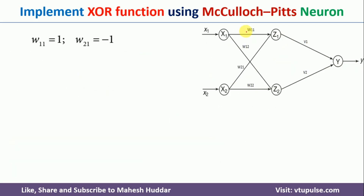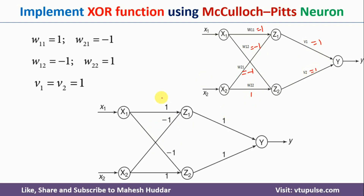The final weights are: W11 = 1, W12 = −1, W21 = −1, W22 = 1, V1 = 1, and V2 = 1. This is how the XOR logic function is implemented using the McCulloch-Pitts Neuron. In this video, I discussed how to implement the XOR function with a simple numerical example. If you like the video, please like, share, and subscribe. Press the bell icon for regular updates. Thank you for watching.